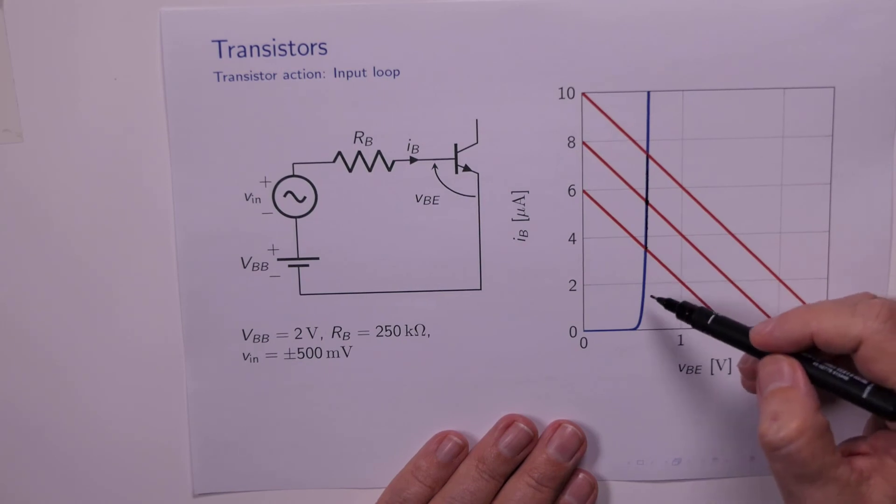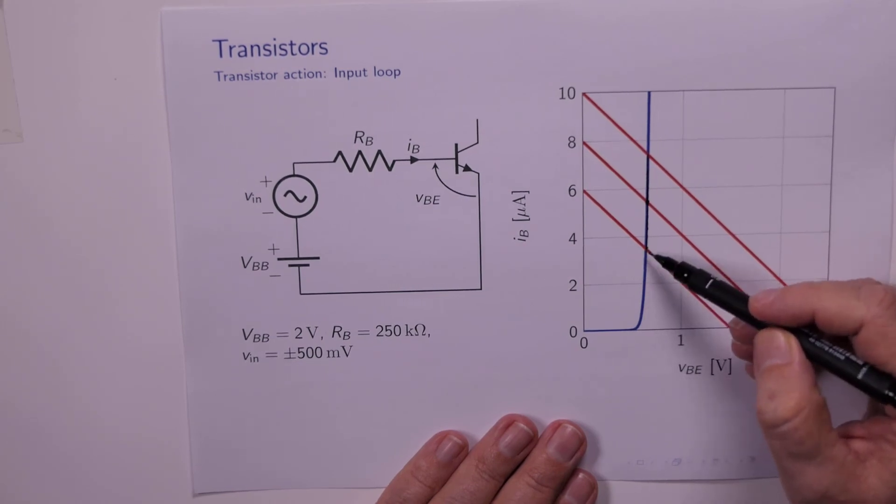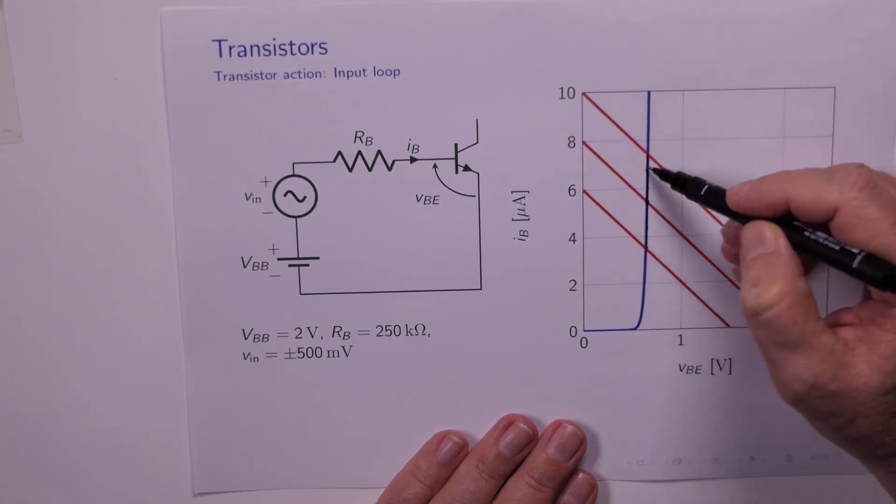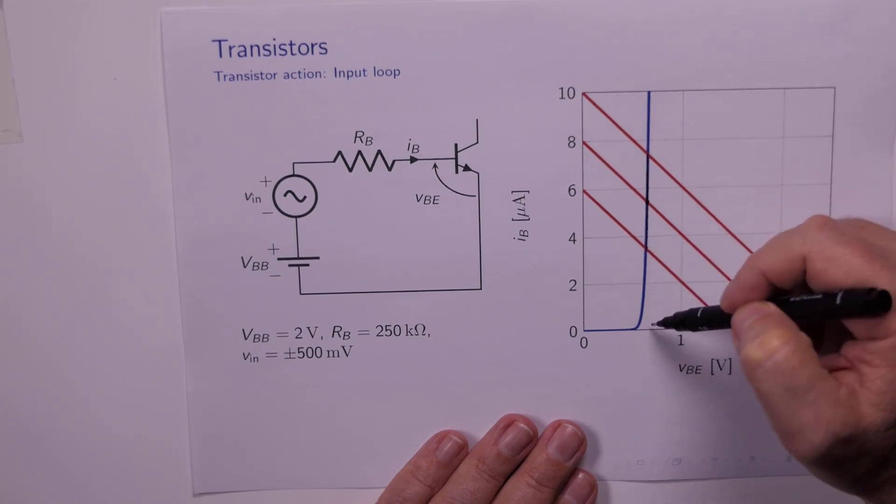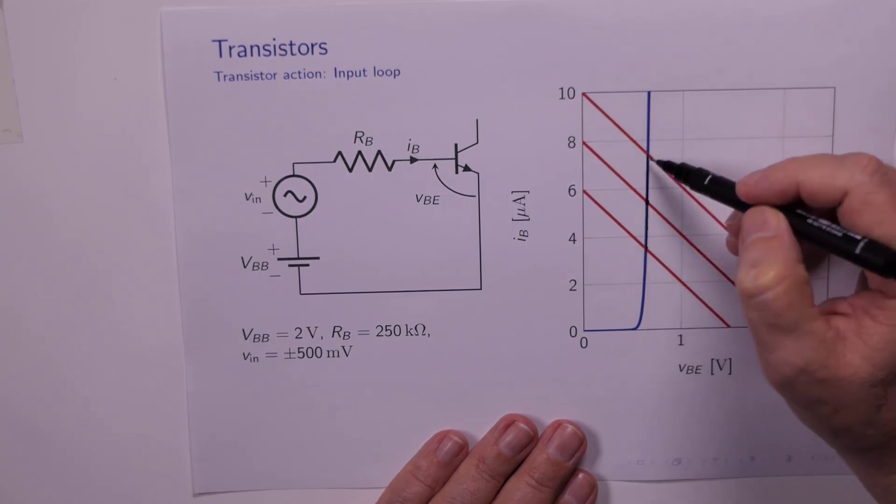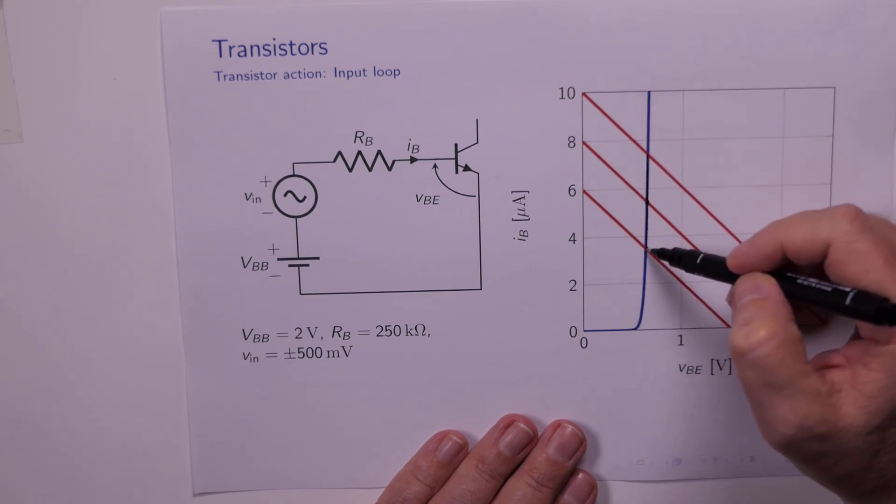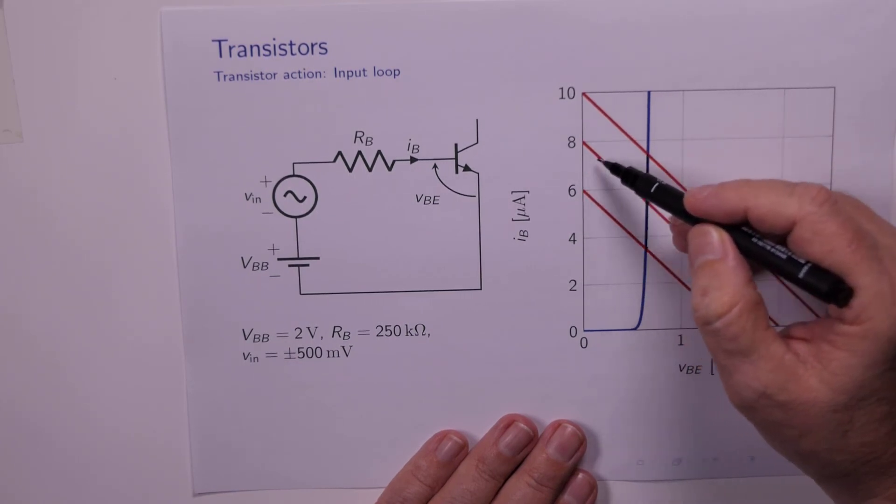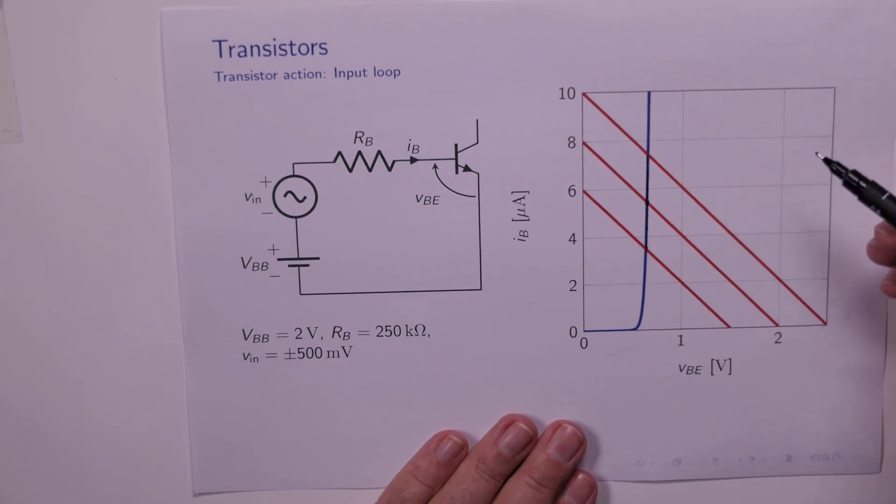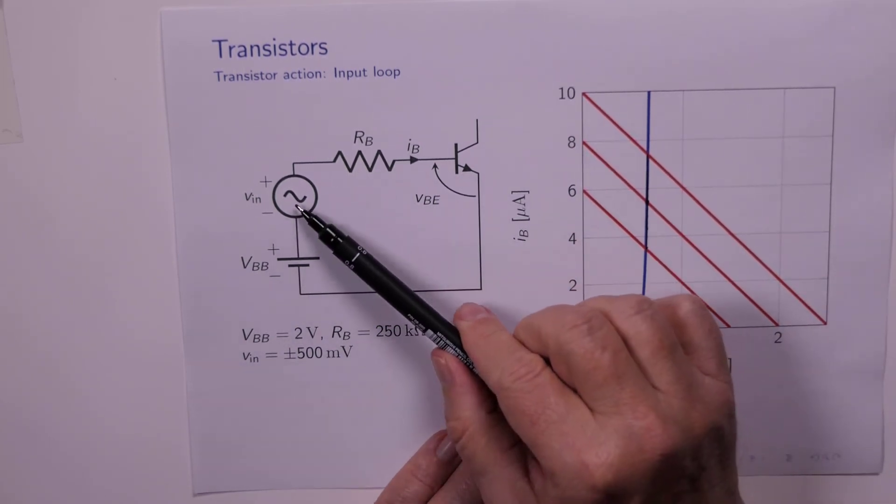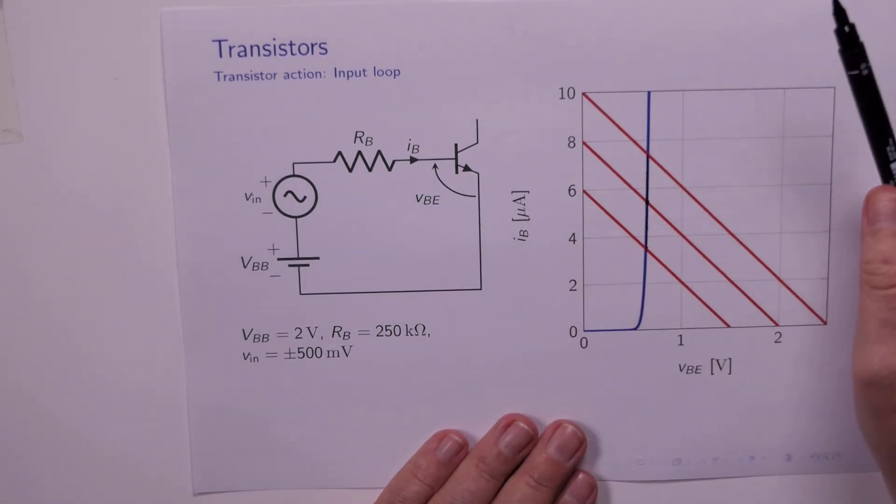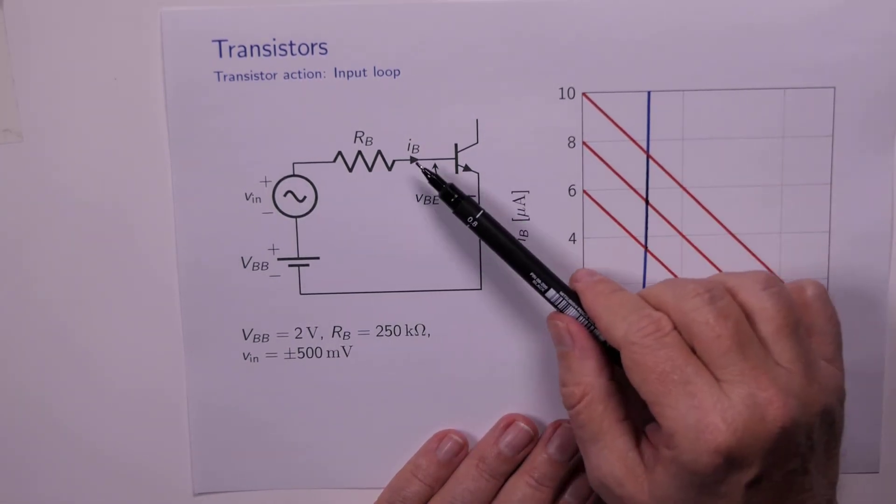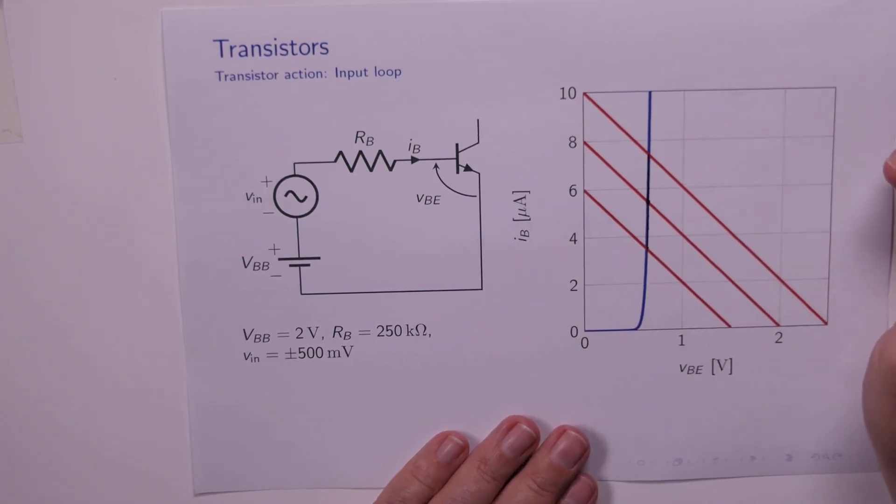And you can see that VBE doesn't change very much at all because the slope of this curve is so great. And even though VBE is only changing by a few millivolts, IB is changing significantly on this vertical scale here. So a changing VIN here causes a changing IB. And of course that gets reflected in the output terminal characteristic. So let's have a look now at the output loop.